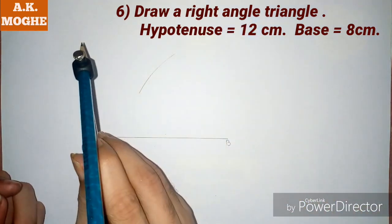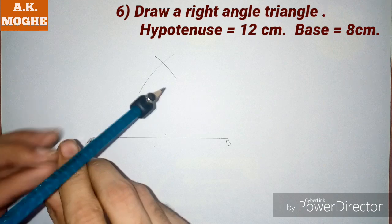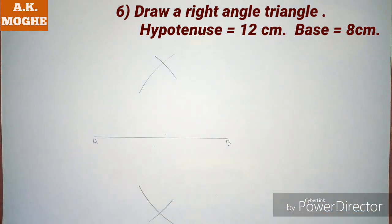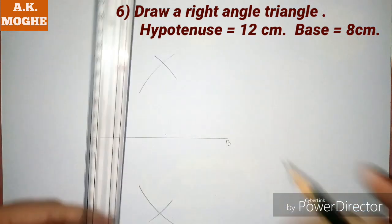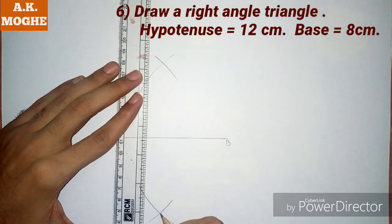Take more than half the distance on either side of the line from both points A and B, and join those points with the help of a scale.